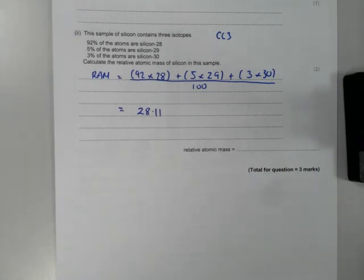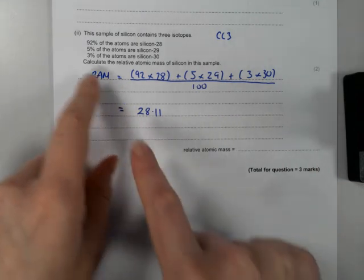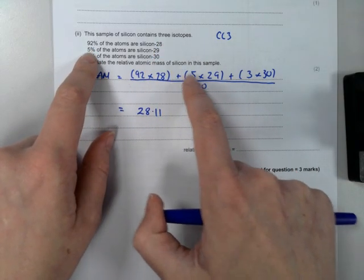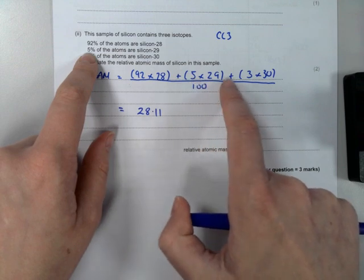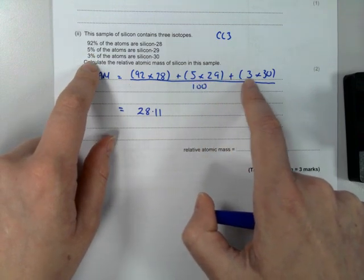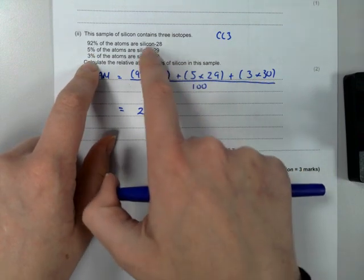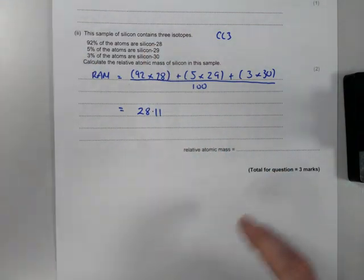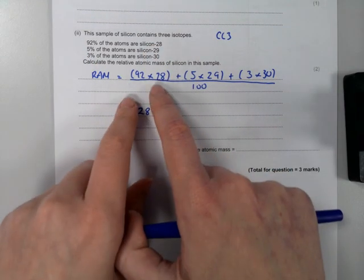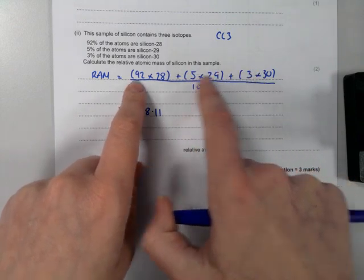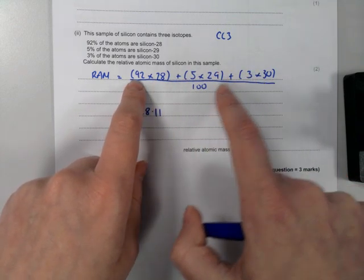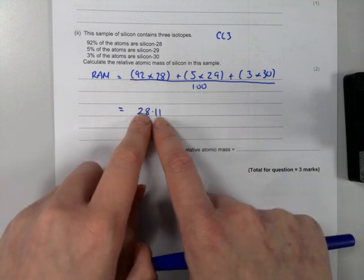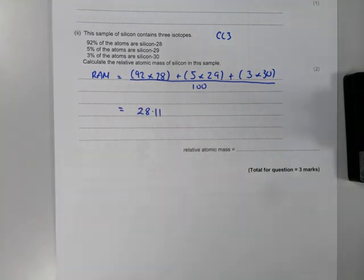All you need to do is take the percentage and multiply by the mass number — do that for each isotope. These are dashes, they are not minuses; you can't have a minus mass. Once you've done your multiplications, add the numbers together, and because it's a percentage, divide by 100. Your answer works out as 28.11.